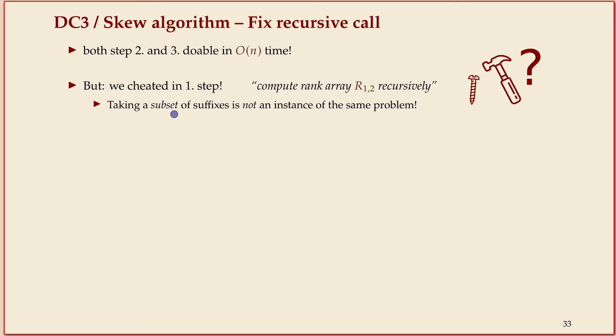The overall problem was: here's a string, sort the suffixes. Or more specifically, here's the string, give me the rank array that tells me for each suffix its rank. But now I'm trying to call the algorithm recursively on: take all the indices not a multiple of three and sort those. That's not quite the same. To do that recursively, we would need a string - some string T prime - that if I call the problem recursively on that string would give me exactly the ranks I need.